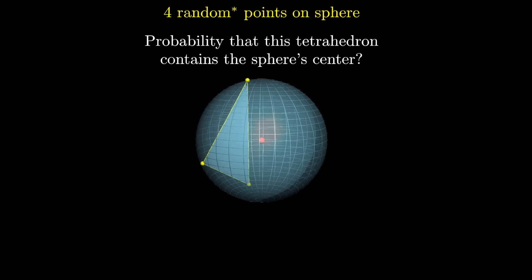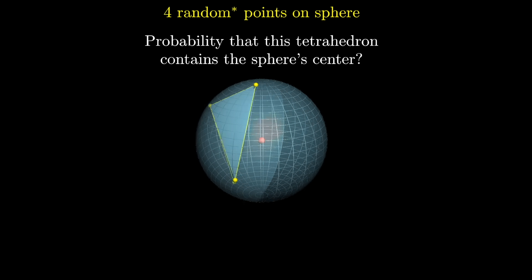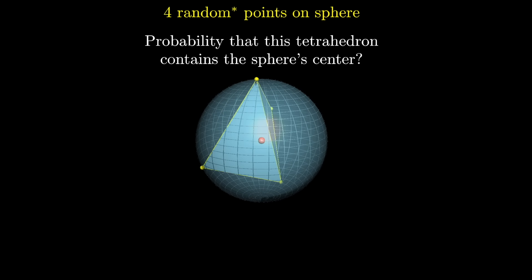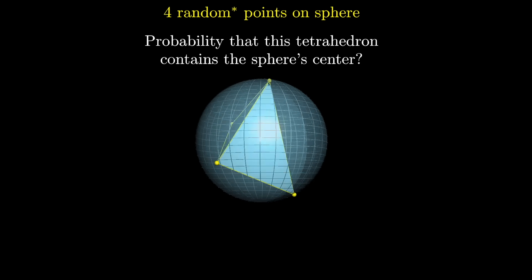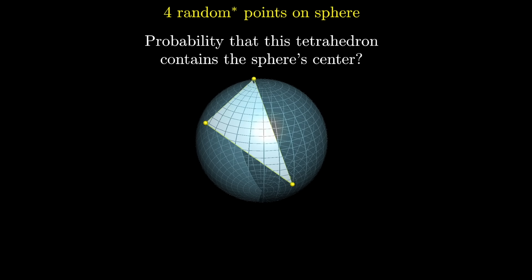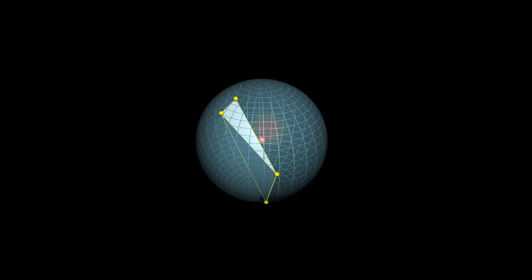Go ahead, take a moment and kind of digest this question. You might start thinking about which of these tetrahedra contain the sphere's center, which ones don't, how you might systematically distinguish the two. And how do you even approach a problem like this? Where do you even start?